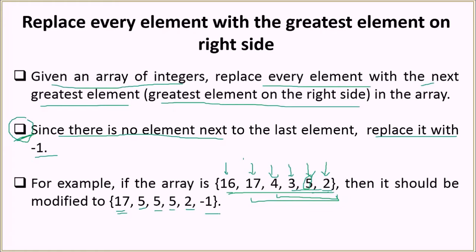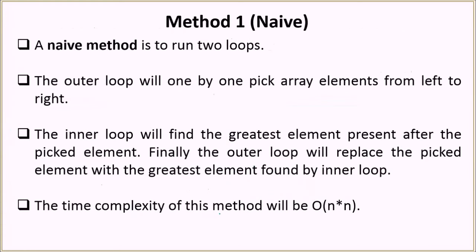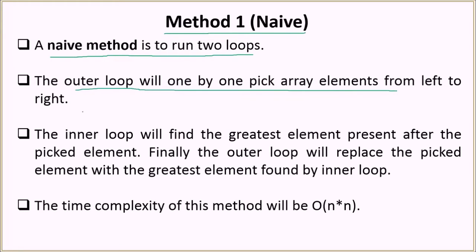Now we are going to look at multiple solutions. First, let's look at the naive solution. The naive method says to run two loops: the outer loop will pick array elements one by one from left to right, and inside it, an inner loop will find the greatest element present after the picked element. The outer loop runs for the length of the array.